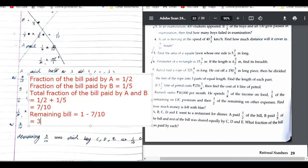Very good. So 3 upon 10 is remaining. Now, if you don't know how, 1 can be written as 10 upon 10. 10 minus 7, 3 upon 10. So remaining bill is 3 upon 10.